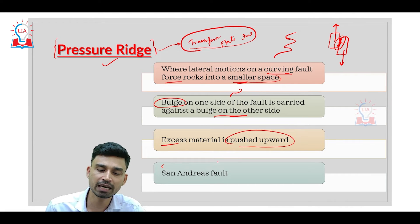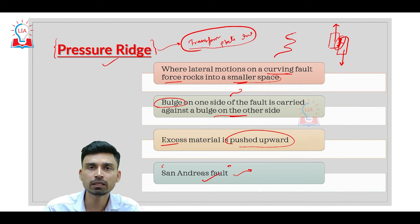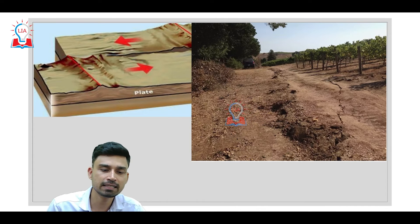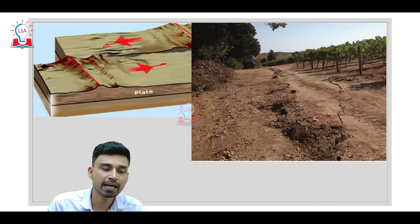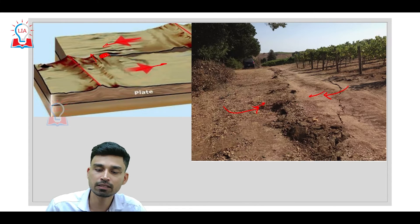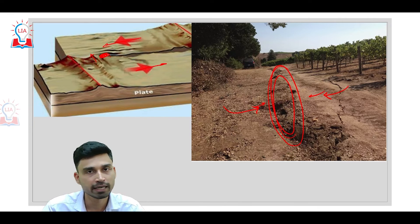The best example of pressure ridge can be observed around the San Andreas Fault, where the California plate and the North American plate have a continental-continental transform plate interaction. As these two plates move linearly and some part moves laterally, the central part of the region gets compressed and material is pushed upward. This is shown in the actual photograph — on one side we have the first plate, on the other the second plate, and the excess material being pushed up forms the pressure ridge.